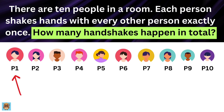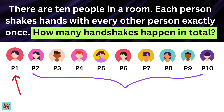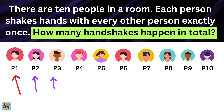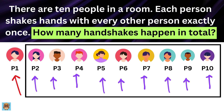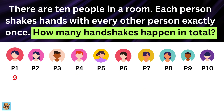Let's start with Person 1. Person 1 goes around and shakes hands with everyone else — that means they shake hands with Person 2, Person 3, Person 4, and so on, all the way to Person 10. So how many handshakes did Person 1 just make? Well, there are nine other people in the room, so Person 1 will make nine handshakes.